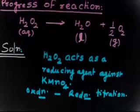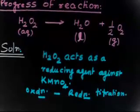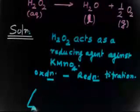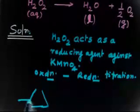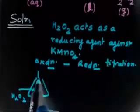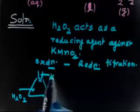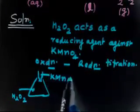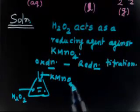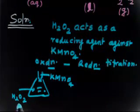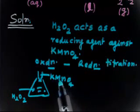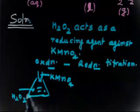What we do is take a sample volume of H2O2 at different time intervals and titrate it with KMnO4. By knowing the volume of KMnO4 used, we can say that the volume of KMnO4 is directly proportional to the concentration of H2O2 at that time.